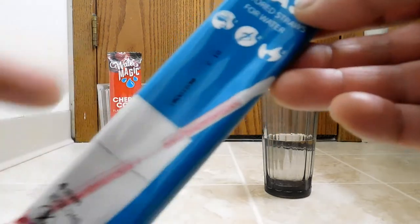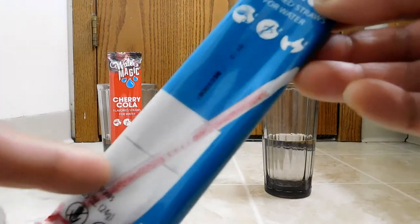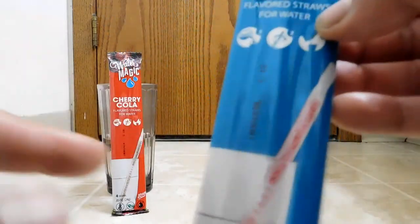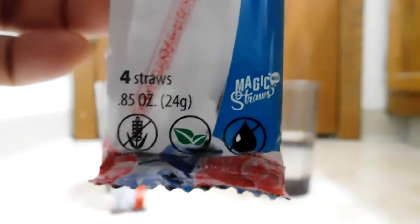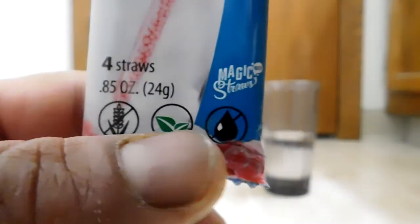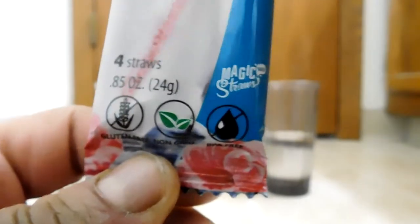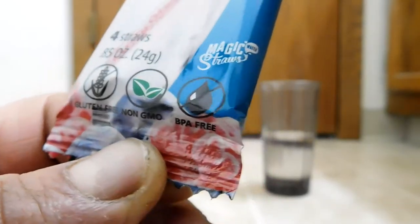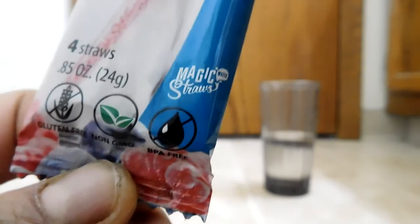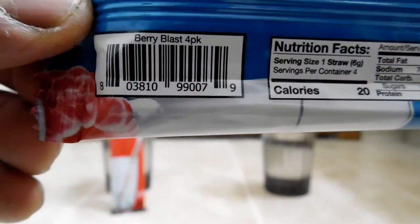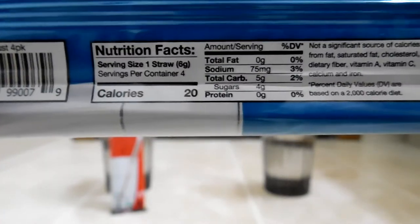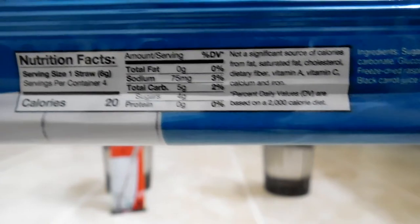As the water passes through the straw heading towards your mouth, the little rocks must flavor the water to be whatever the associated flavor is. You can see we get four straws per pack. It's a gluten-free product that's non-GMO, and it's also BPA-free.